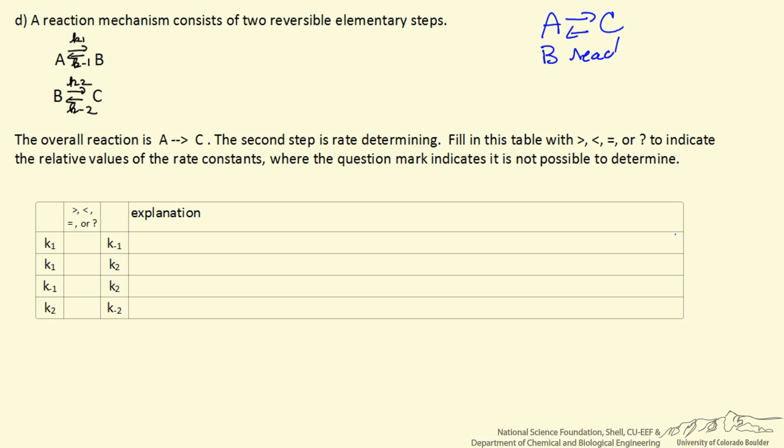B is a reactive intermediate. What we mean by that is that its concentration is low, it very quickly reacts after its form. The second step in this sequence is the rate determining step.